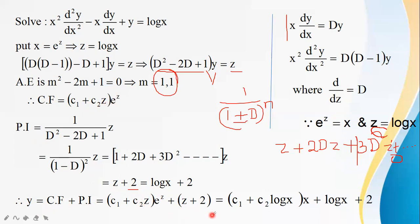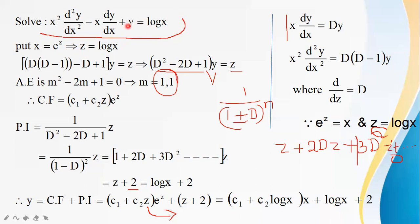Therefore the complete solution is y = (c₁ + c₂z)e^z + z + 2. Now replacing z with log x and e^z = x: y = (c₁ + c₂ log x)x + log x + 2. Whenever an equation has variable coefficients, first convert to constant coefficients, then use previous methods.